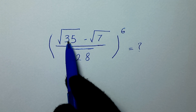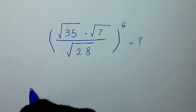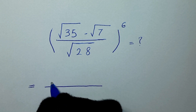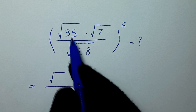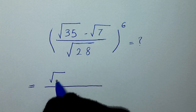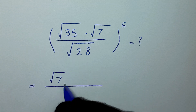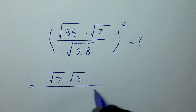In the first step, we have square root of 35, and we can write this as square root of 7 times 5, so we can write this as square root of 7 times square root of 5.